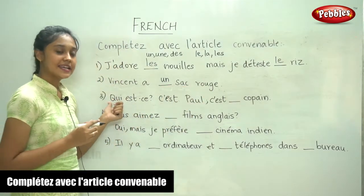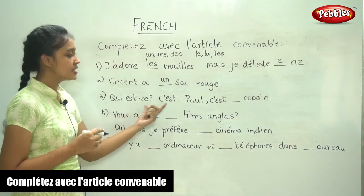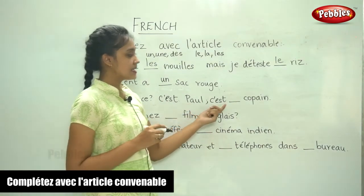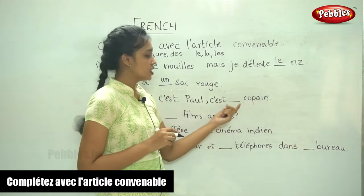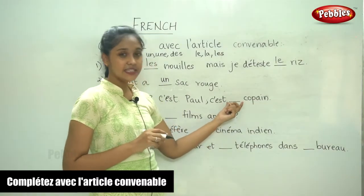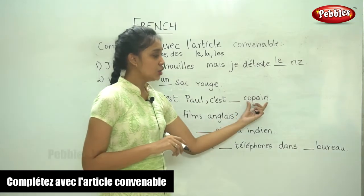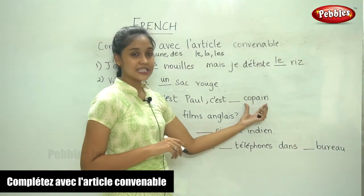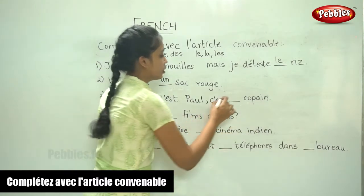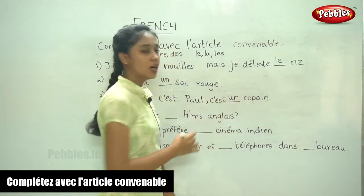The next sentence: 'Qui est-ce?' — who is it? 'C'est Paul.' — it is Paul. 'C'est dash copain.' So here we need to fill in the indefinite article. 'Copain' means classmate, and copain is in the masculine form.